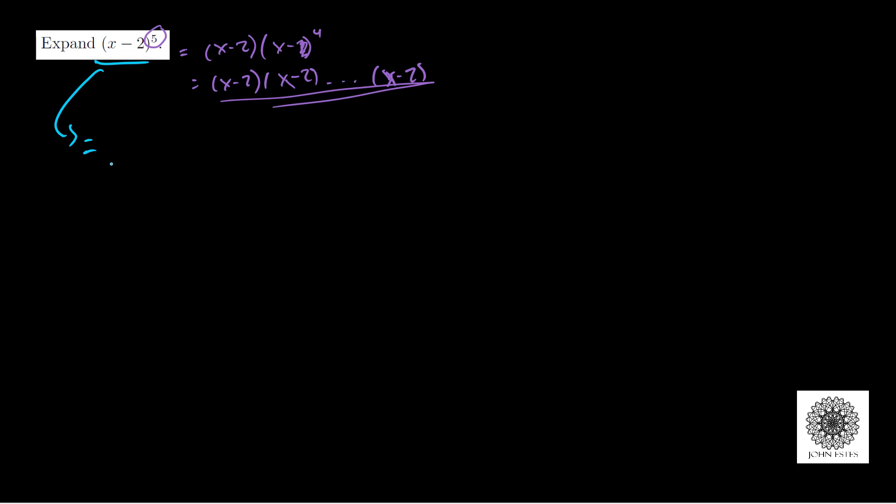I'm gonna do this in blue here. We have: something we don't know times x to the fifth times (-2) to the zero, plus something we don't know times x to the fourth times (-2) to the first, plus something we don't know times x cubed times (-2) squared, then x squared times (-2) cubed.